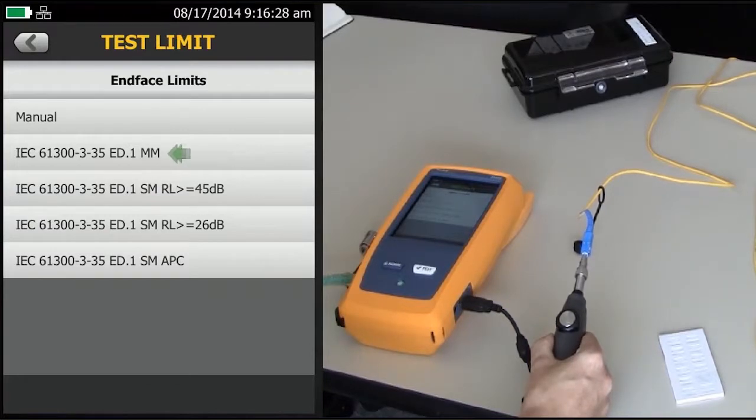The first one is for multi-mode, whether it's field polished or factory polished. The second one here is for single mode, and that's if it's factory polished. The third one here is for single mode again, but that's if you're doing a field polish. And then finally, we have the APC, the Angled Physical Contact Connector.